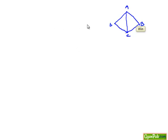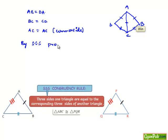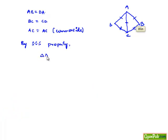In both triangles, DA is equal to AB as all sides in the rhombus are equal, and DC or CD is equal to BC. Also, AC is a common side for both triangles. So by the SSS property, as three sides correspondingly in the two triangles are equal, we can say triangle ADC is congruent to triangle ABC.